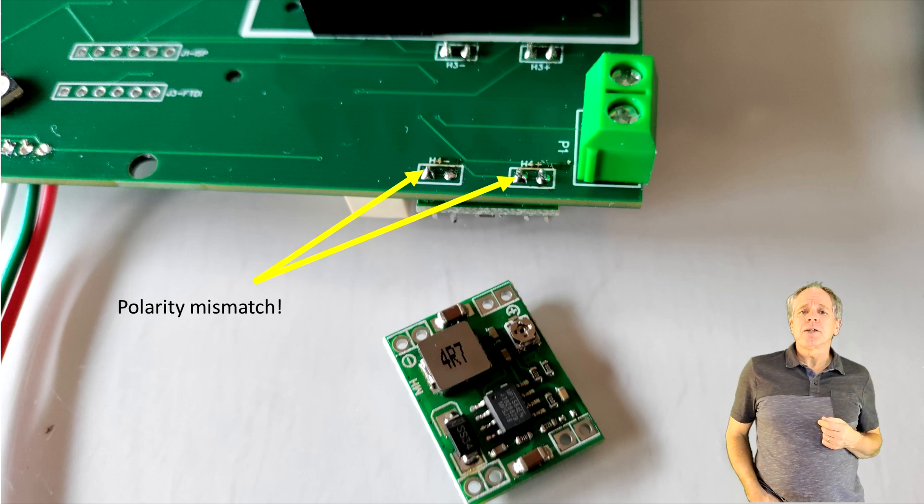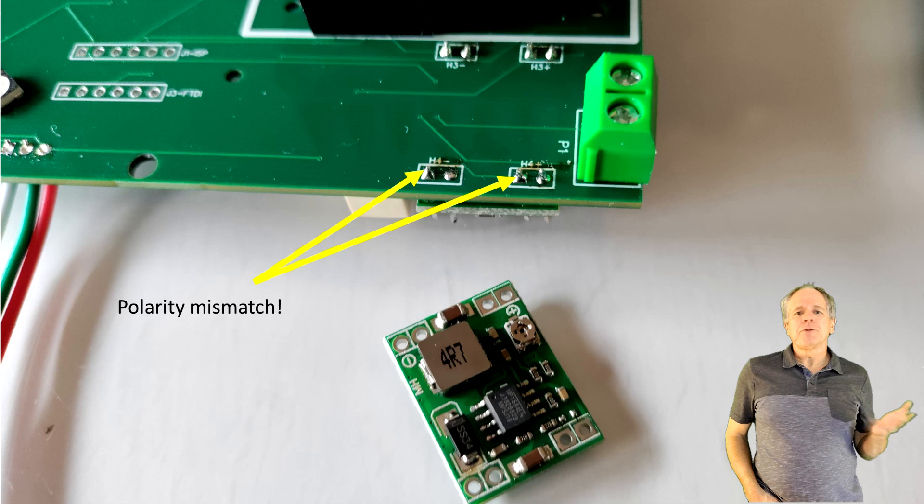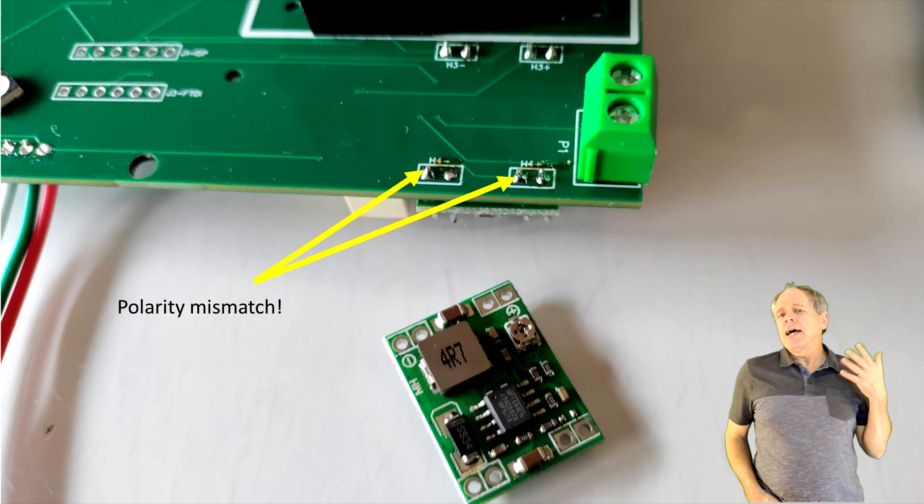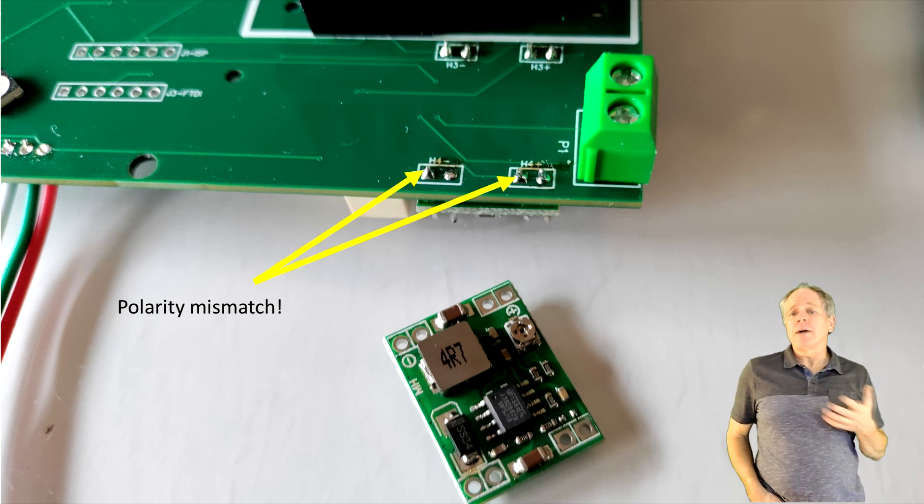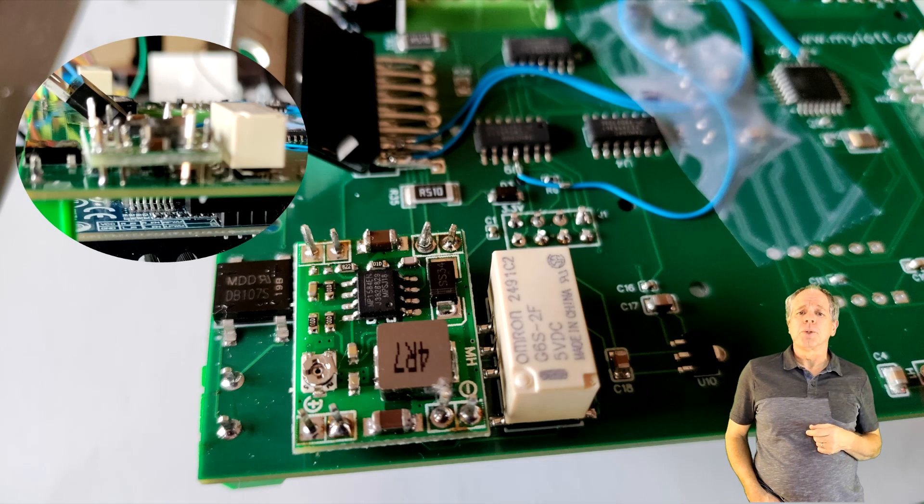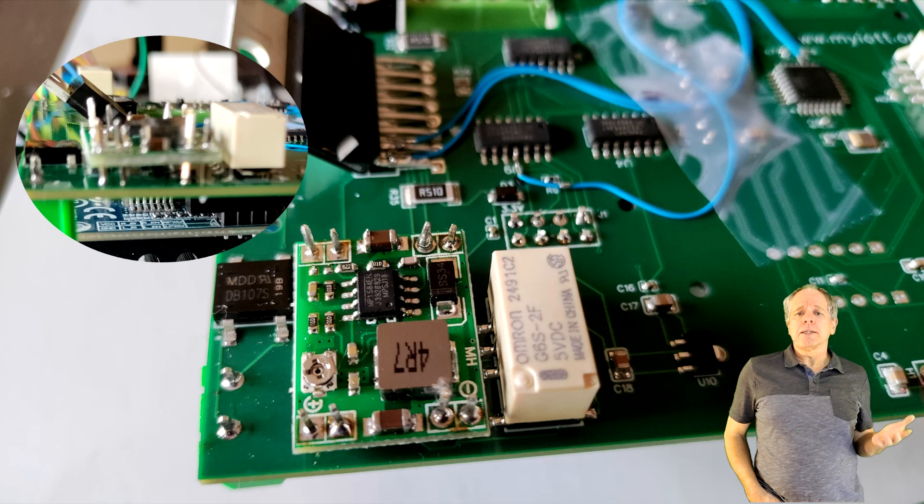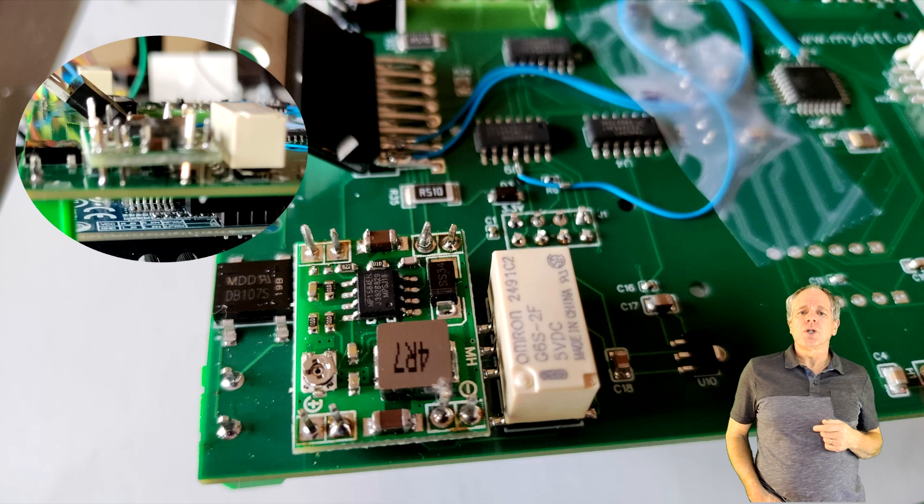The final assembly step was mounting the DC-DC converter and here I was running into the first problem. Obviously the polarity of the soldering pads was wrong, therefore I was not able to install the converter as intended. Instead, I had to turn it around and mount it on pins above some other components on the back side of the board. So I had the first error to be corrected for the next version of the board, but luckily it was not the end of the show.